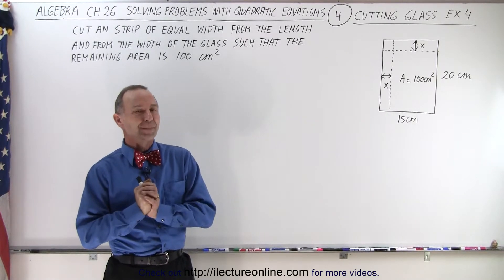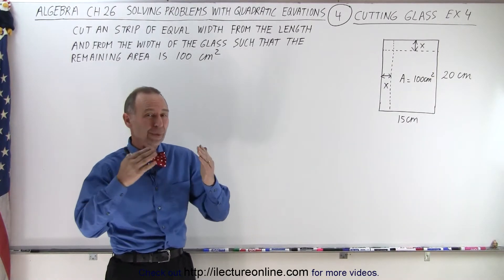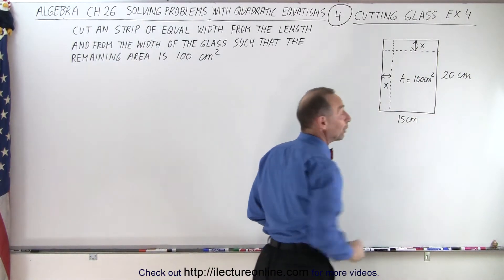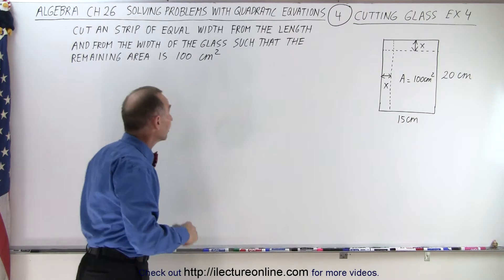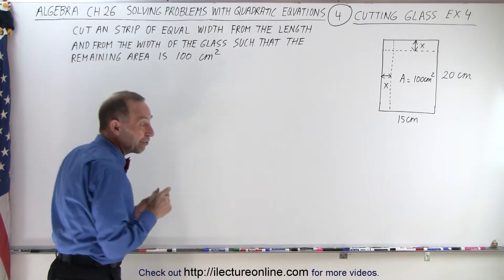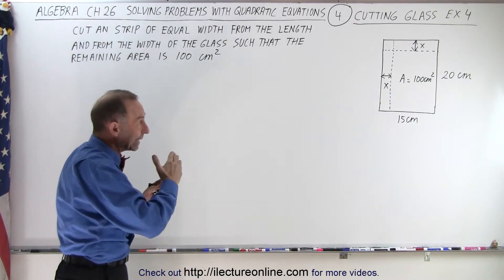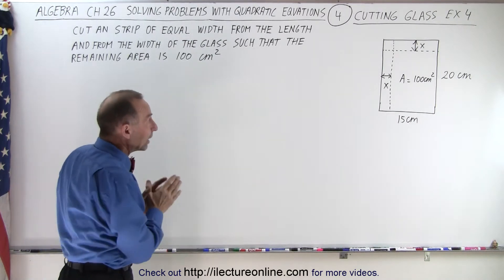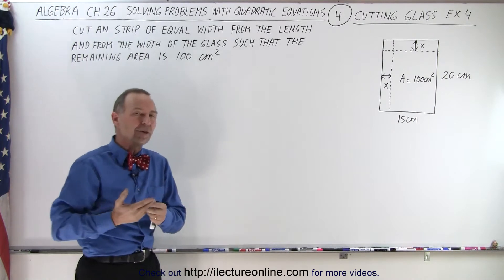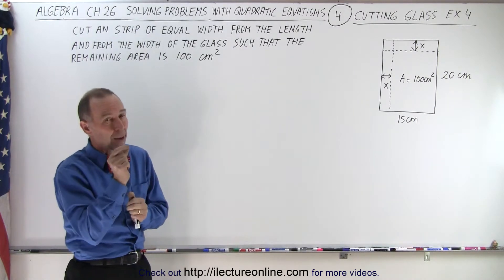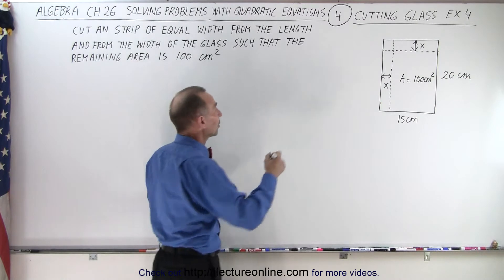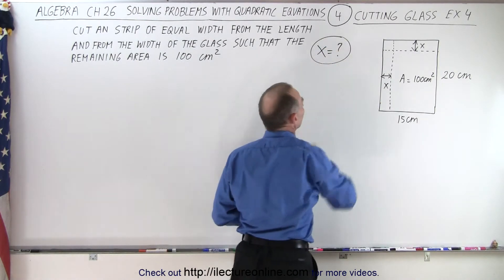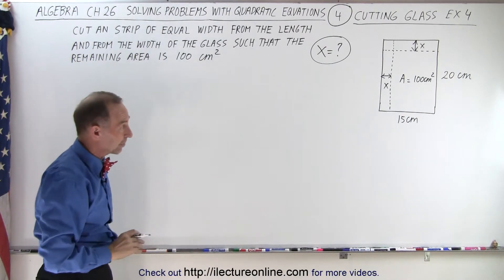Welcome to Electronline. We start with a piece of rectangular glass that has a length of 20 centimeters and a width of 15 centimeters. They're asking us to cut a strip of equal width from both the length and the width of the piece of glass such that the remaining area is 100 square centimeters. So how big should x be — how much should we cut off, and it must be the same amount.